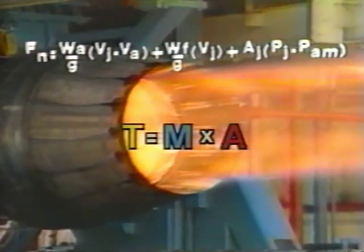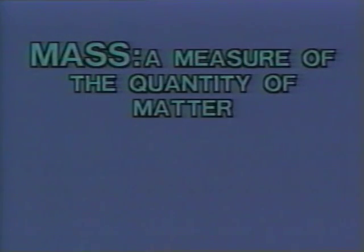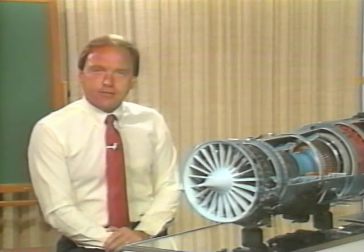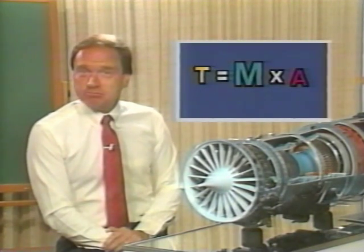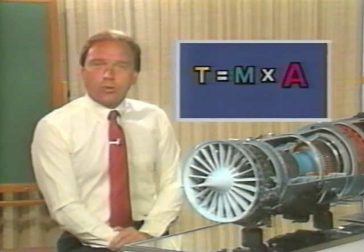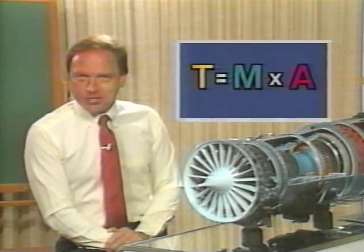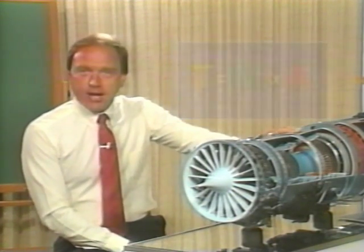Thrust equals mass times acceleration, or T equals M times A. Mass is a measure of the quantity of matter — in this case, the amount of air going through the engine. Acceleration is a change in velocity, or how much the air is speeded up as it passes through the engine. These two factors are the main ingredients for thrust. The greater the mass of air flowing through the engine, the greater the thrust. The greater the acceleration of the air, the greater the thrust. Hang on to this T equals M times A concept — we'll find it's a handy tool to understand why engines are designed as they are.